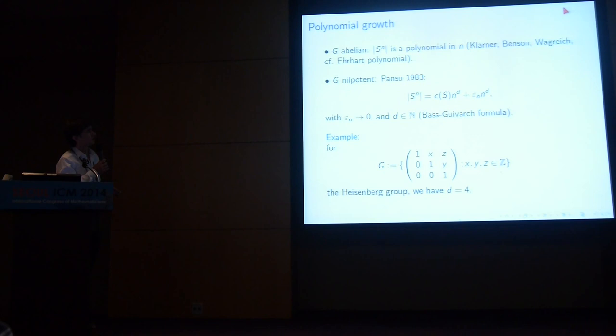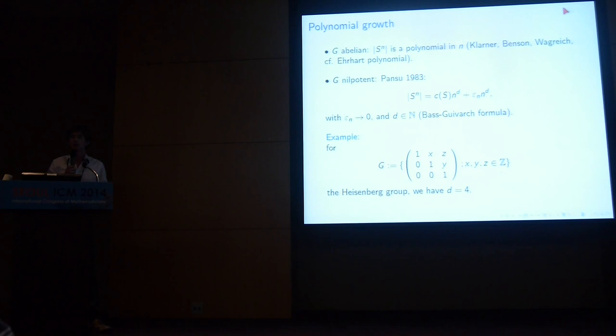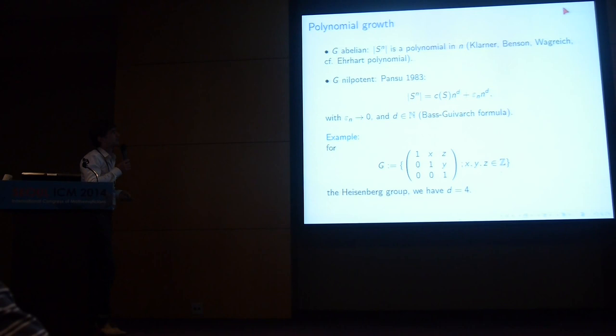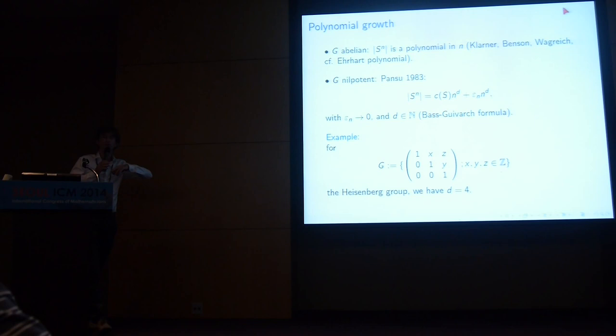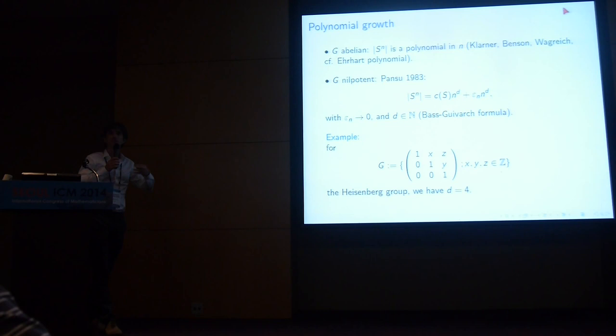Let me start with the basic historical cases. When G equals Z, the cardinality of S to the n, which is the ball of radius n in the Cayley graph, is a polynomial in n — at least when n is large. This is connected to the notion of the Ehrhart polynomial: if you take a polygon in the plane with vertices at integer coordinates and dilate it by a factor n, the number of integer points inside is a polynomial in n. Ehrhart was a French high school teacher who obtained his PhD at the age of 60.